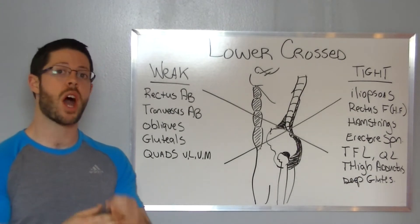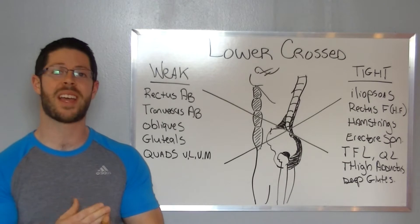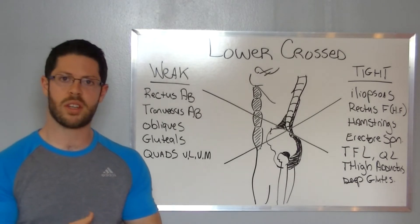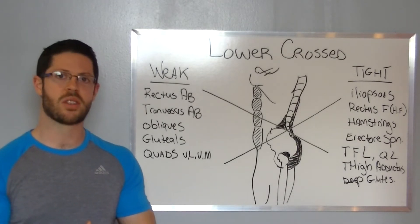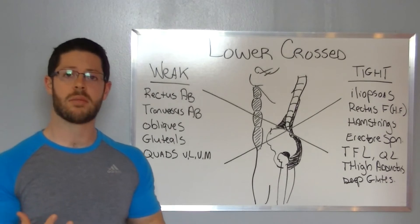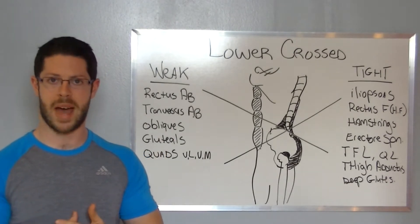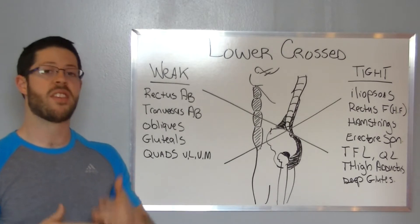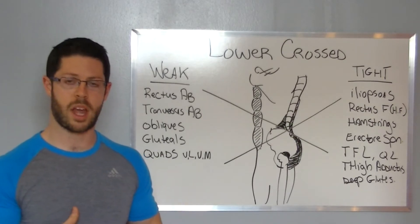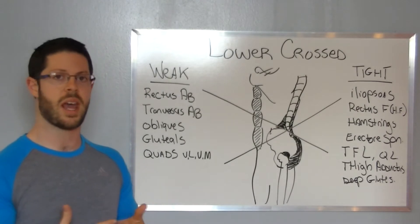A few weeks ago I posted the upper body cross syndrome and I explained how overuse injuries, lack of exercise, and basically gravity as we age, pulling on our framework is going to cause some muscular imbalances for the upper body. The same goes for the lower body. We're going to look at some of the muscles today.